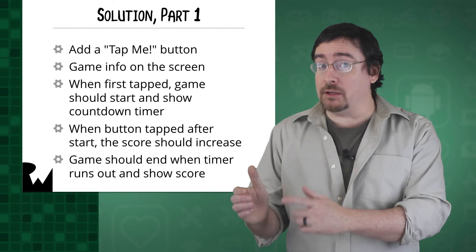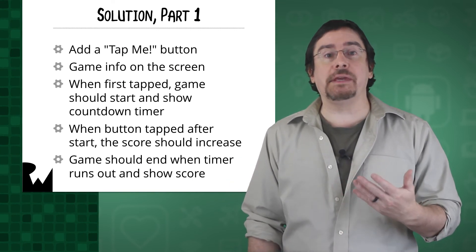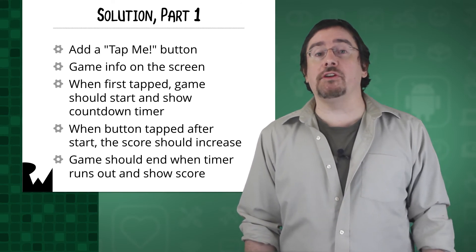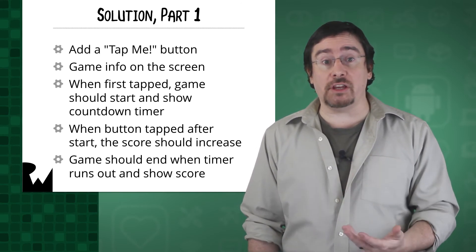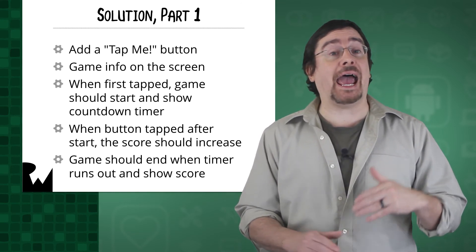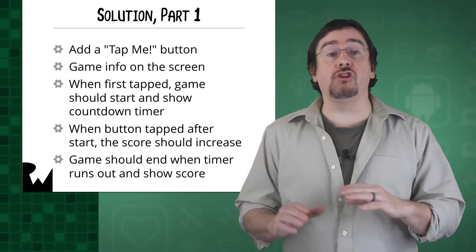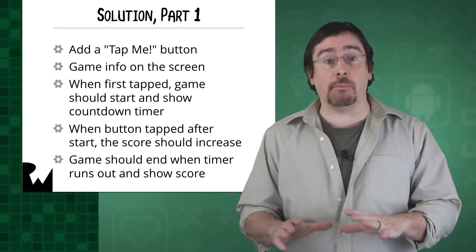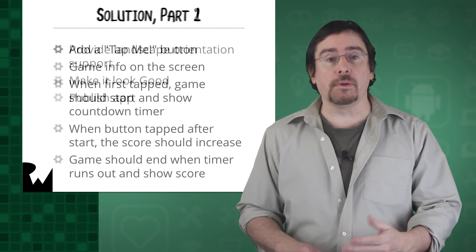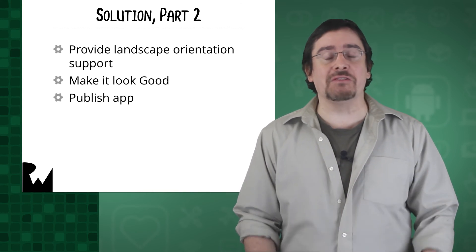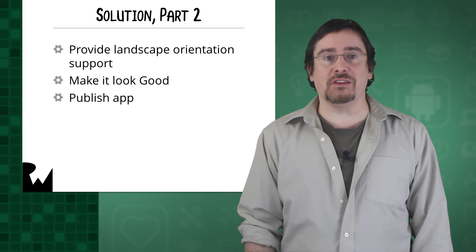Done with your list? Here's what I came up with. Add a tap me button to the screen. Put some game info on the screen such as what the current score is and time left. When the tap me button is first tapped, it should start the game and show the countdown timer. When the tap me button is tapped after the game has started, it should increment the score. When the timer runs out, the game should stop automatically and then show the final score. I also want to put the app in landscape orientation.